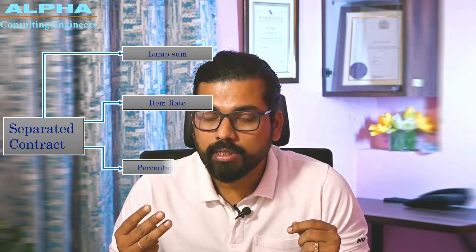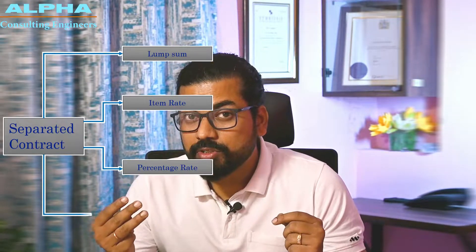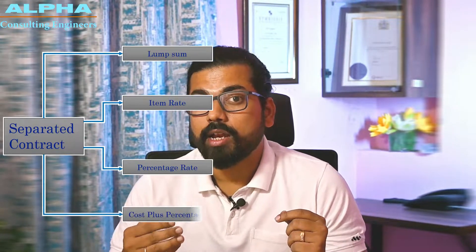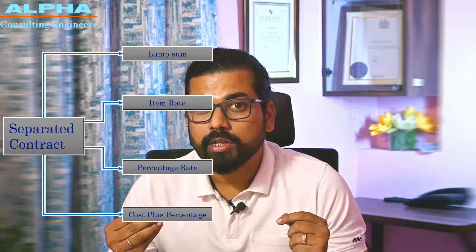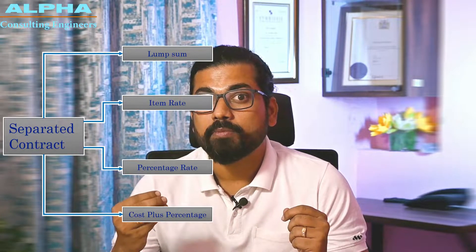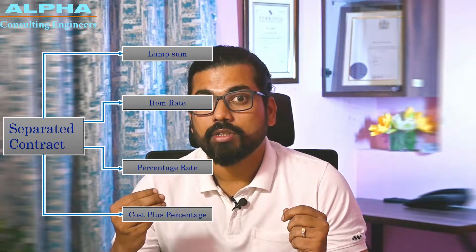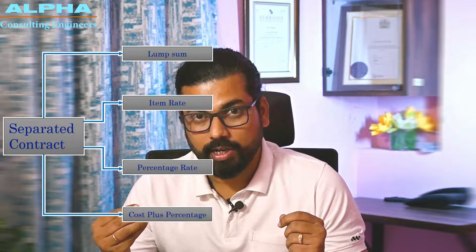There are four variants of the separate type of contract: number one is lump sum type of contract, number two is item rate contract, number three is percentage rate contract, and number four is cost plus percentage rate contract.